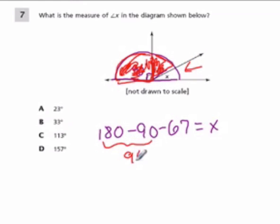So, 180 minus 90 is 90, minus 67 is 23, so the answer here is A, 23 degrees.